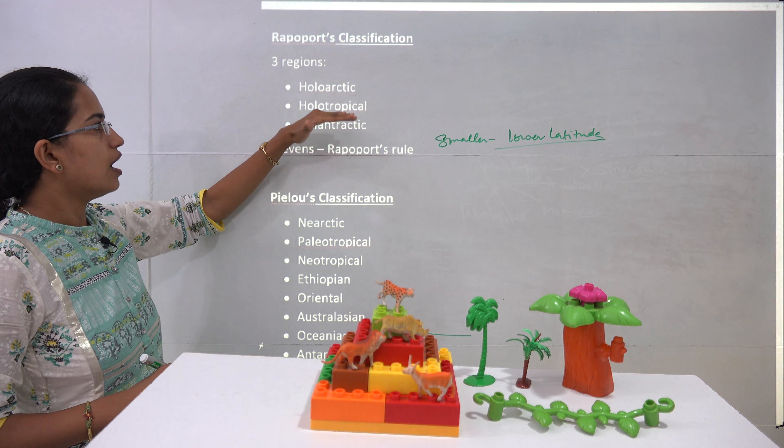The three kingdoms Morrone classified were the holoarctic, the holotropical, and — instead of austral — he called it astral. In the holoarctic he included the nearctic and paleoarctic. In the holotropical he included neotropical, the Africotropical region, the oriental region, and the Australiotropical region. Under the astral region he gave the maximum classification: one was Andean towards South America, then archonotic (the Antarctic area), the Cape area from South Africa, the Neoguinean area from New Guinea, the Australotemperate region, and finally the New Zealandic region — six regions under the astral kingdom.